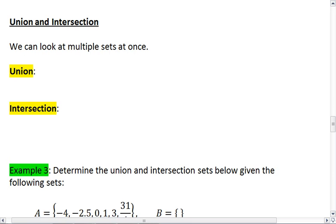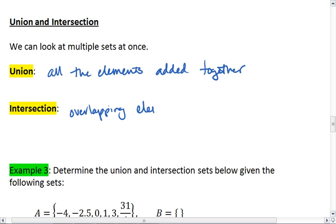The union is all the elements in all the sets that we're looking at. So all the elements added together. The intersection is looking at only the overlapping elements. And this is going to be best understood if we look at an example.